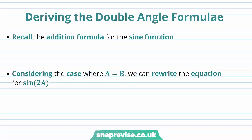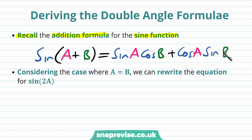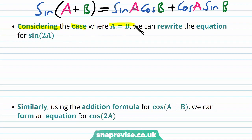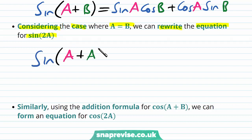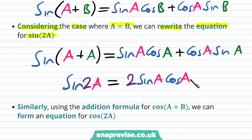So how can we derive the double angle formulae? Recall the addition formula for the sine function: sine of a plus b is equal to sine a cos b plus cos a sine b. Considering the case when a equals b, we let b equal a, so sine of a plus a equals sine a multiplied by cos a plus cos a multiplied by sine a. Therefore, sine of 2a is equal to 2 sine a cos a.